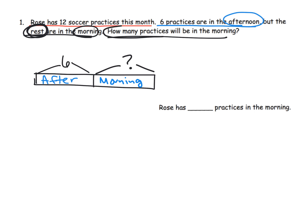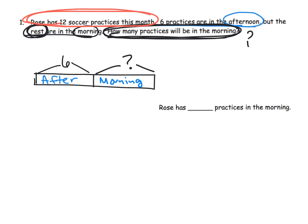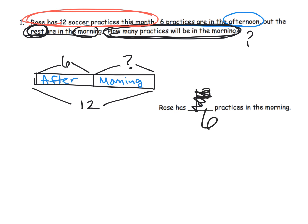The question asks how many practices will be in the morning, so that's what the question mark represents. Rose has 12 soccer practices this month — that's the total, the whole thing — so we're going to put 12 right here. This is one way to show the tape diagram, and this is the classic model that suggests subtraction: the whole is 12, six are in the afternoon, so the rest are in the morning, giving us 12 minus 6.